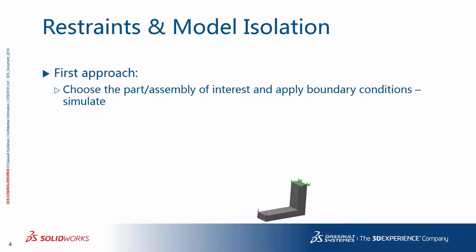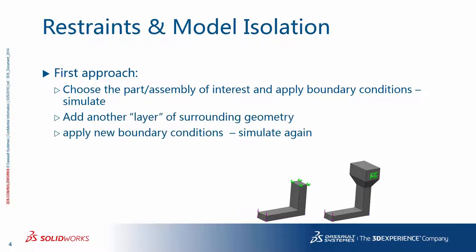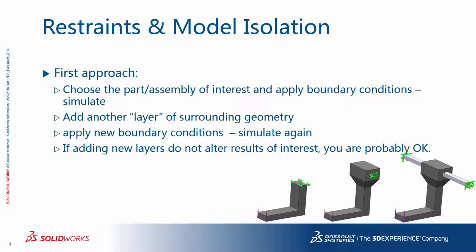In choosing the restraints and deciding how to isolate the model, one approach could be to choose the part or assembly you are interested in, assume some boundary conditions, and run a simulation. After that, you add another layer of surrounding geometry, apply new boundary conditions, and simulate again. By repeating this process, if adding new layers does not significantly alter the results of interest, you are probably okay.